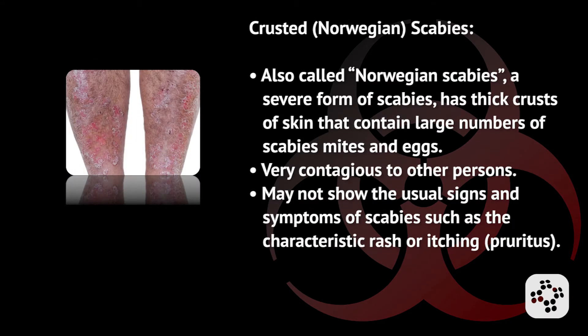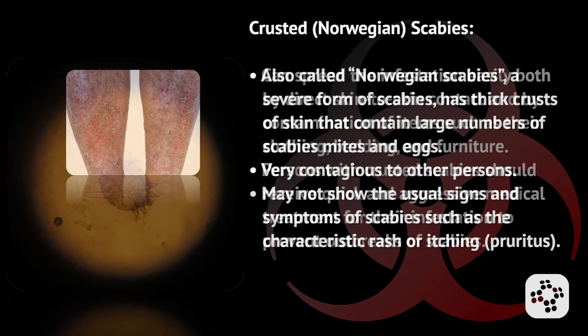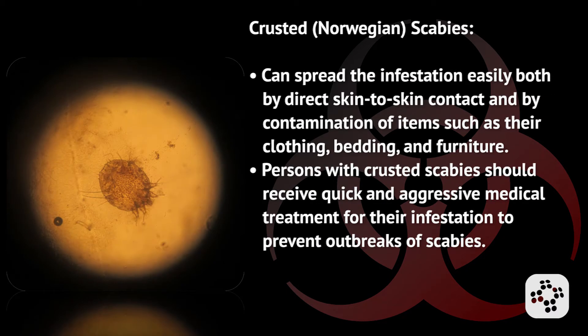Crusted Norwegian scabies is a severe form of scabies. It has thick crusts of skin that contain large numbers of scabies mites and eggs. It is very contagious to other persons and may not show the usual signs and symptoms of scabies, such as the characteristic rash or itching. It can be spread easily both by direct skin-to-skin contact and by contamination of items such as clothing, bedding, and furniture. Persons with crusted scabies should receive quick and aggressive medical treatment for their infestation to prevent outbreaks.